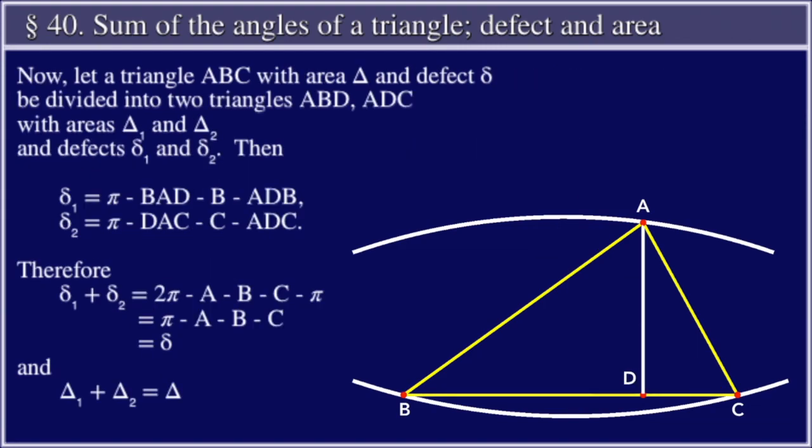Now let a triangle ABC with area Δ and defect δ be divided into two triangles ABD and ADC with areas Δ₁ and Δ₂ and defects δ₁ and δ₂. Then δ₂ is equal to π minus ∠DAC minus ∠ADB minus ∠ADC.